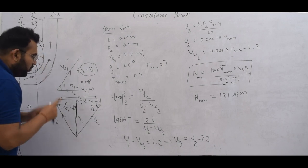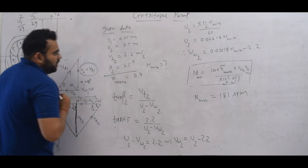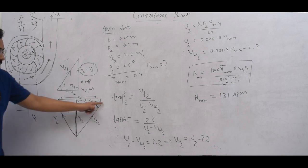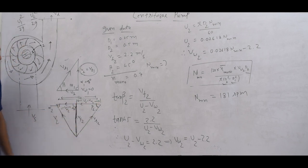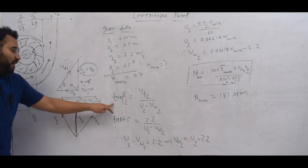VW2 is not given, so the hint is the beta 2 value. You know the outlet triangle in a centrifugal pump. Here is beta 2. So tan beta 2, what will it be?